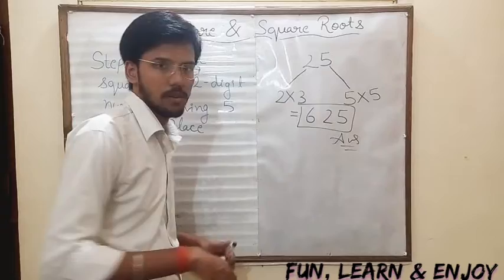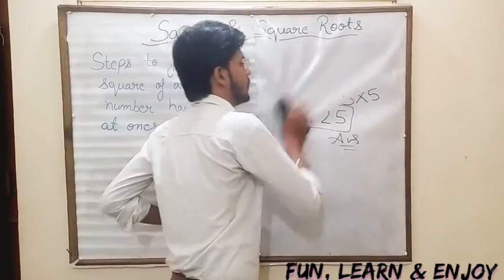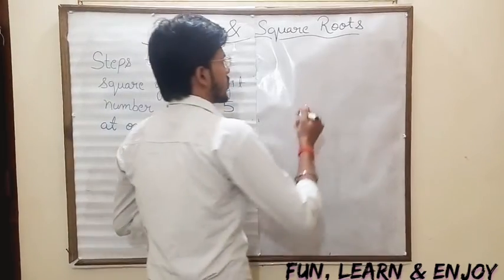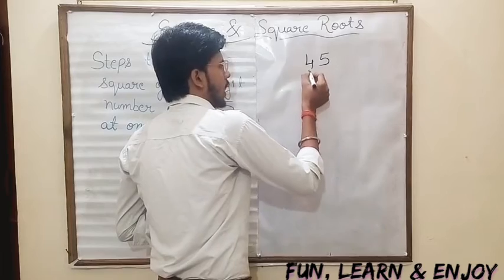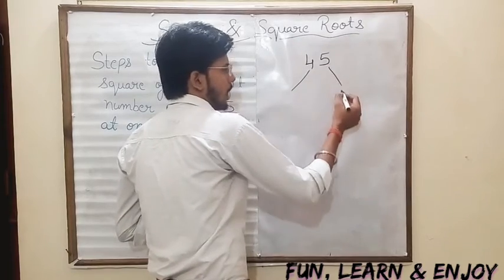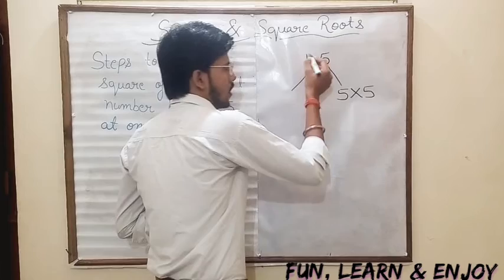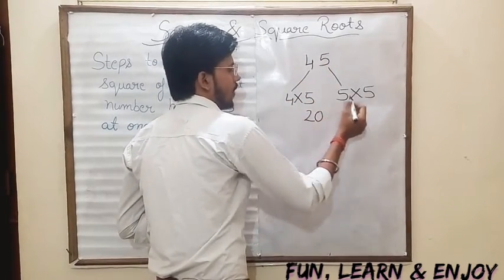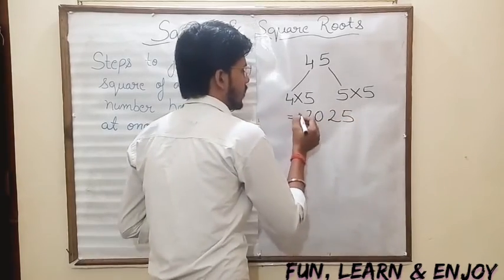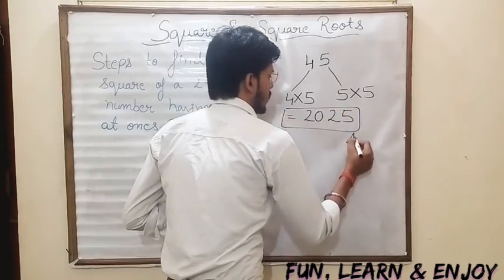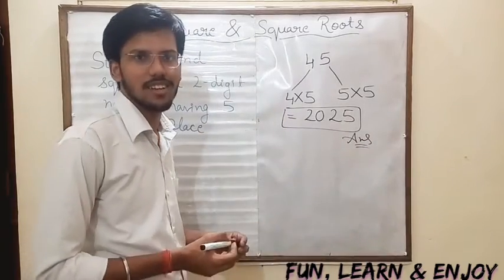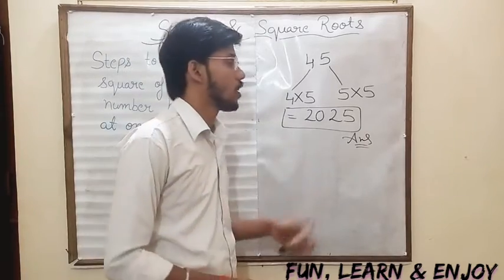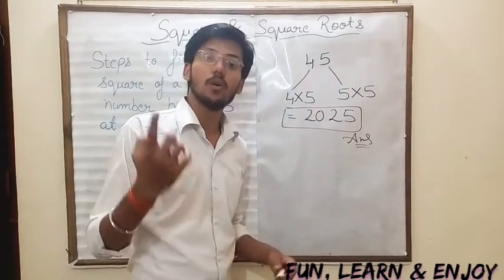Now let's take another number — suppose that is 45. Again, I am going to divide it into two parts: 5 into 5, and 4 into the next number. 4 fives are 20 and 5 fives are 25. This is our answer: 2025. So this is an easy trick to find the square of a two-digit number having 5 at the ones place.